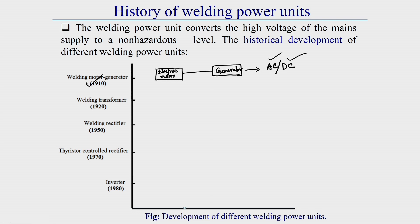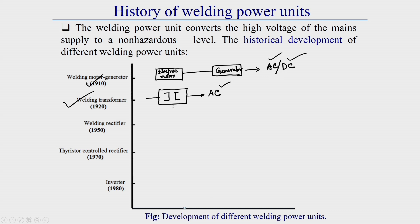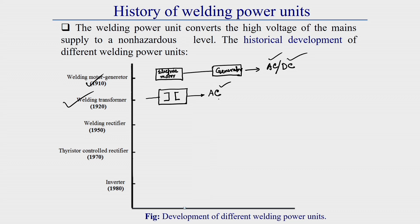Around 10 to 15 years later, in 1920, the welding transformer was developed. The welding transformer converts main supply high voltage and low current to low voltage and high current, with an AC output. It is a step-down transformer that converts utility supply to low voltage, high current alternating current.